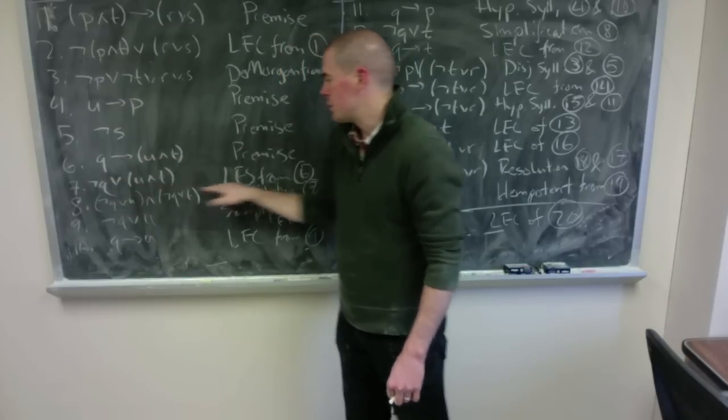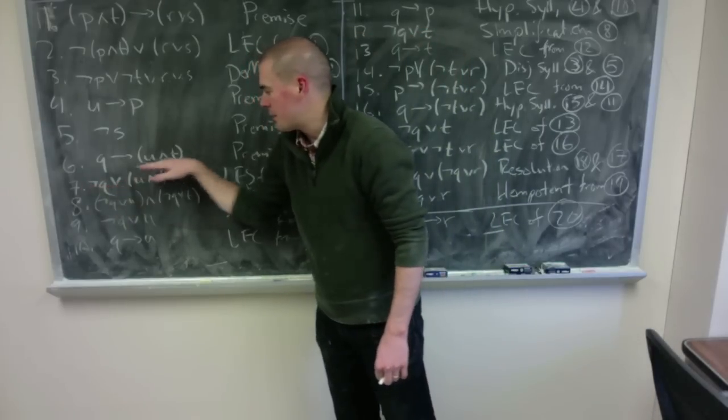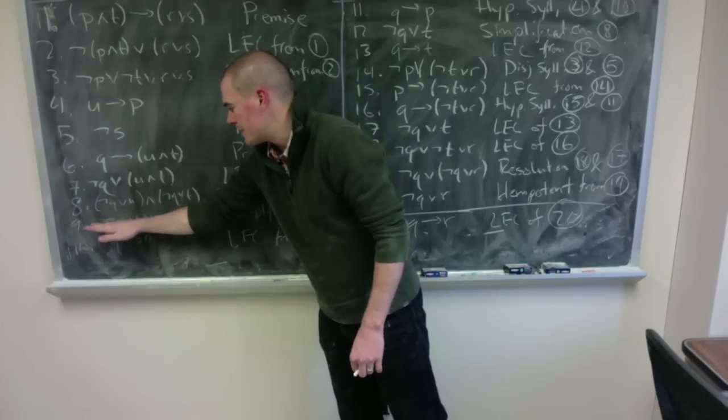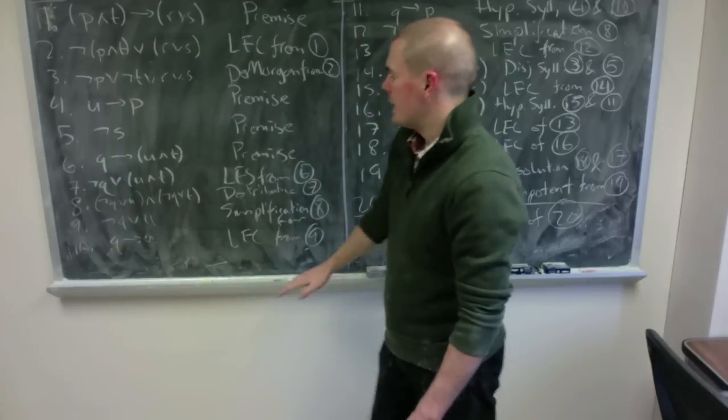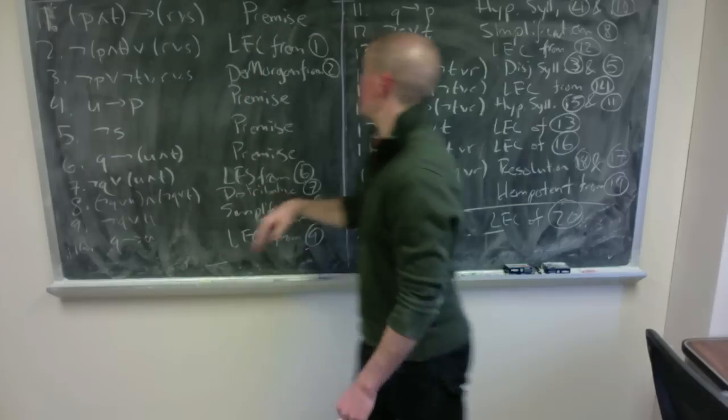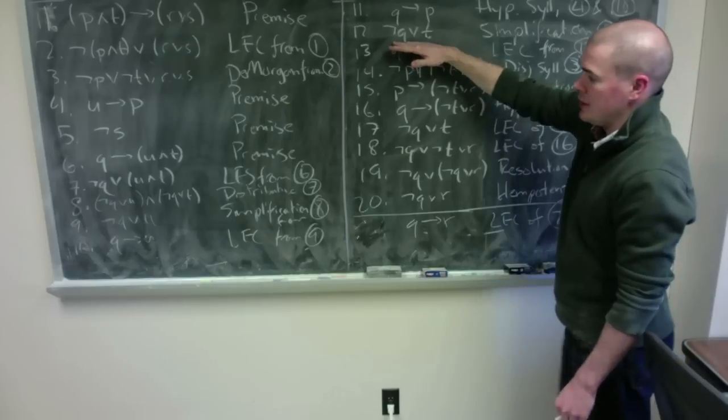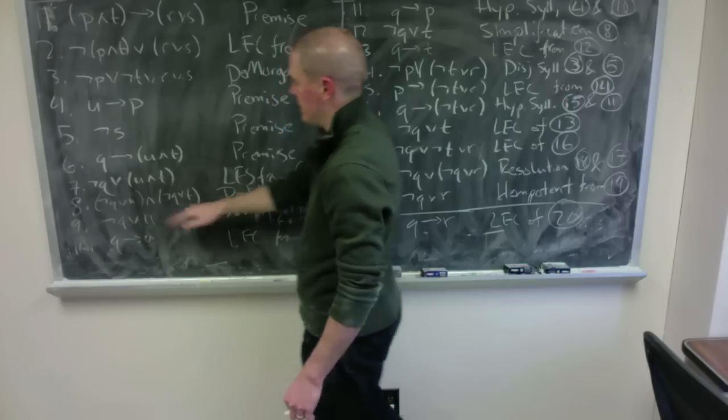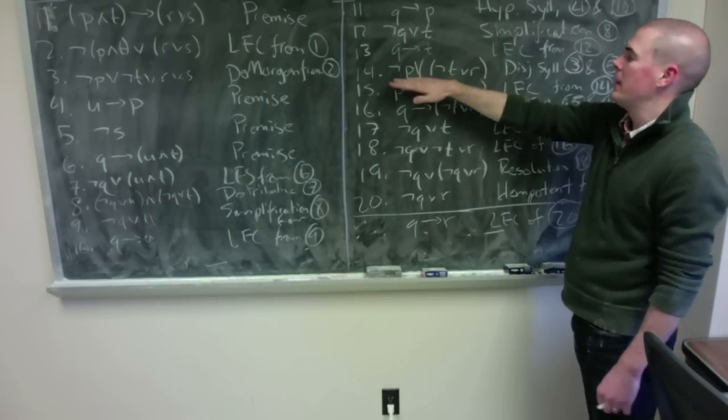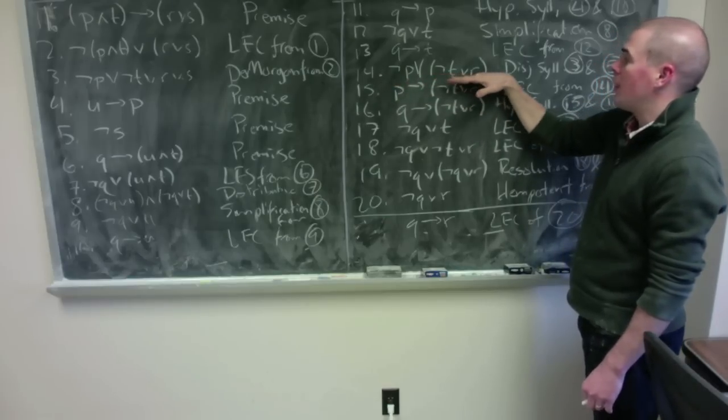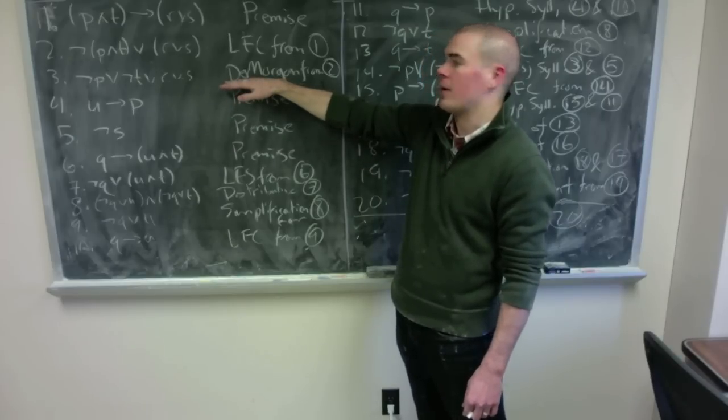I see I'm going to take this conditional out using logical equivalents of conditionals. Then I'm going to see I have an or and an and I'm going to distribute and then I'm going to simplify the left-hand side to see not Q or U is true and get my logical equivalents of conditionals Q implies U. I see that Q implies U and U implies P, so I'm going to see that Q implies P by hypothetical syllogism. Not Q or T is true by simplification of this statement over here. And then I see that that's equivalent to Q implies T. I also see that not P or not T or R is true. It's disjunctive syllogism from the fact that I have not S and I have not P or not T or R or S.